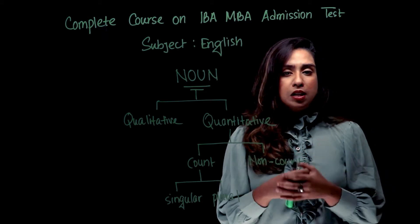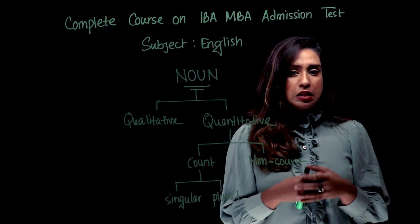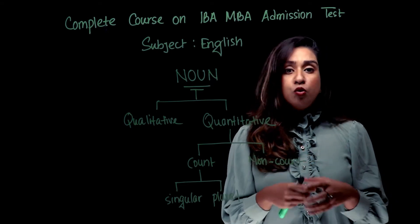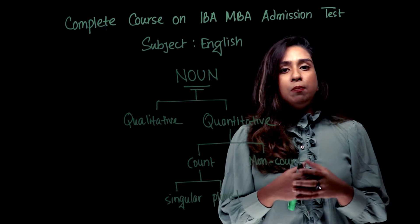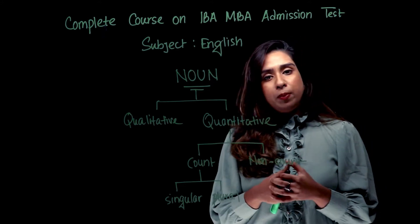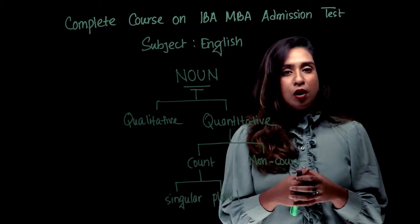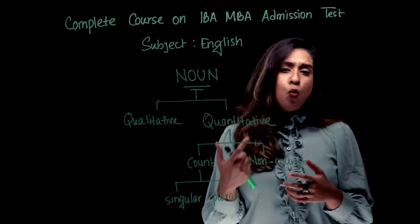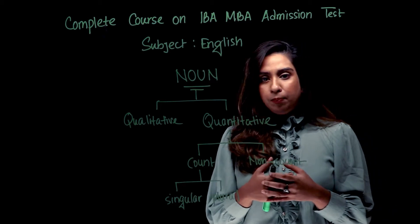Why should we count? Suppose feelings, subject, topic, ingredient — that means we count on non-count nouns. For example, happiness. Happiness means that we count: one happiness, two happiness? It is not possible.